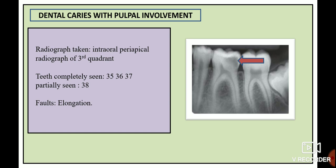The tooth of interest here is 36. In the crown portion, there is an ill-defined radiolucency in the disto-occlusal aspect which is involving the pulp. In the alveolar crest region, the alveolar crest is at 1.5 mm below the level of the CEJ, which is a normal feature.